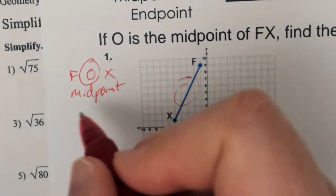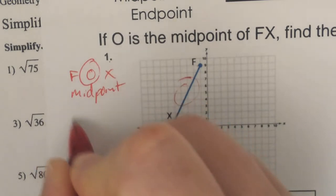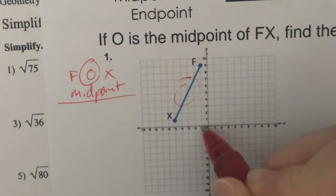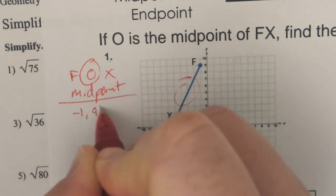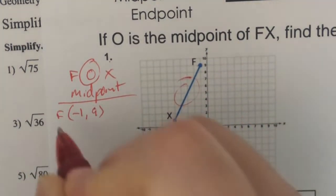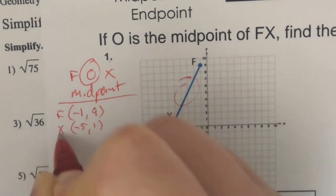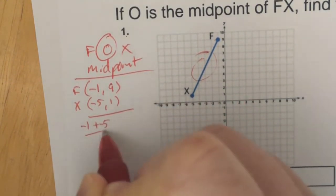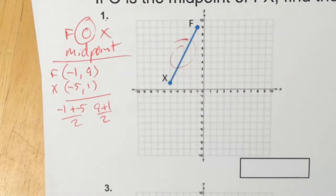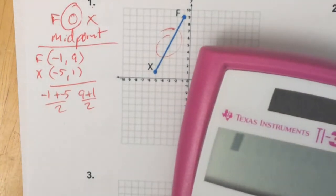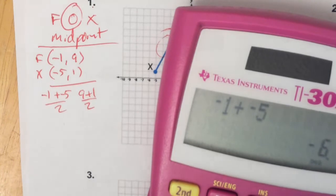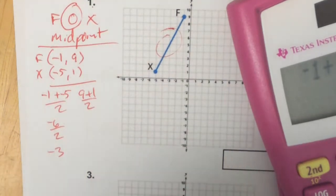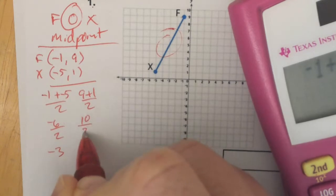To find the midpoint, we're going to be adding them together and dividing by 2. So we take our two points. In this case, F is negative 1, positive 9. And X is negative 5, positive 1. We add them together and divide by 2. So negative 1 plus negative 5, divide by 2. That's negative 6 over 2, which is negative 3. Then 9 plus 1 is 10, divide by 2 is 5.